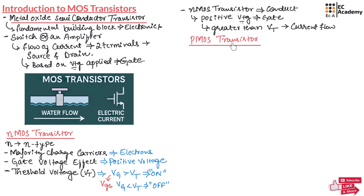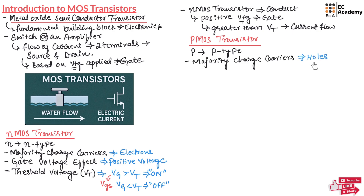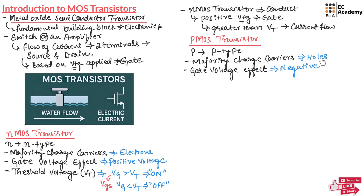Now let us understand the PMOS Transistor. The letter P stands for P-type, which means the majority charge carriers are holes. Holes are positively charged, so they are attracted to negative voltage. Since the majority charge carriers are holes, the voltage applied across the gate should be negative. This negative voltage attracts holes into the channel, enabling current flow from source to drain.